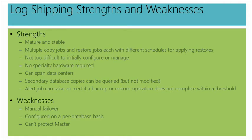My secondary database is read-only queryable based on how I have it set up. Alert jobs can be set up if a copy or restore job fails to occur within a certain threshold and I get an alert. Weaknesses: manual failover, as described. Also, this has to be configured on a per-database basis, so it doesn't protect the entire instance. And it can't protect master — you're not going to turn the full recovery model on master, making it essentially an unprotectable database.